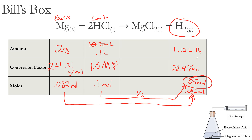Bill's Box is a pretty simple way of organizing yourself — you just follow the paths to get whatever you need in terms of what you're trying to solve. There are different ways you can go. For example, if someone gave you a standard amount of gas and you wanted to find the hydrochloric acid needed, you'd go down and then across, multiplying by 2 because you need twice as much hydrochloric acid going that direction. Your conversion factors sit right there in the box.